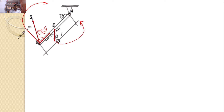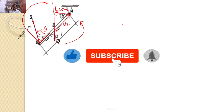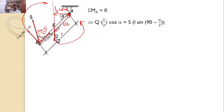We require the distances. The perpendicular distance between S sin(90 − alpha/2) and point A is L. For the weight Q, its line of action acts at the center of gravity, so the perpendicular distance is L/2 times cos alpha. Applying moment equilibrium, sigma M_A = 0: Q × (L/2) cos(alpha) = S sin(90 − alpha/2) × L.